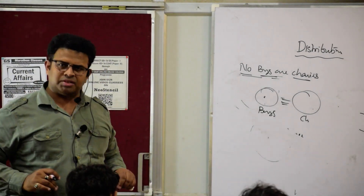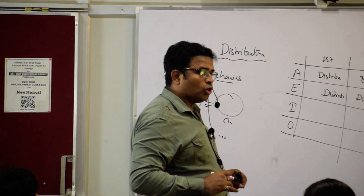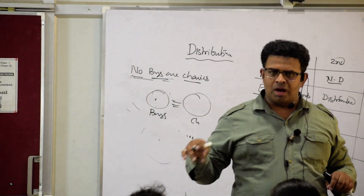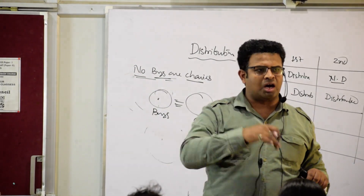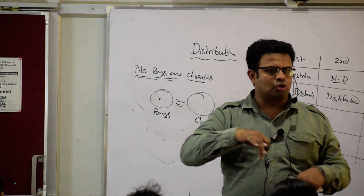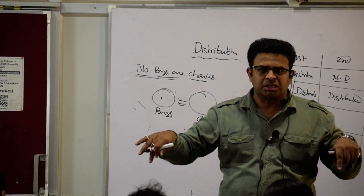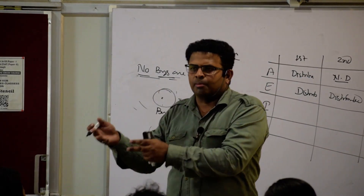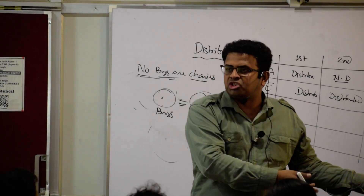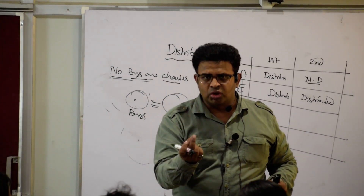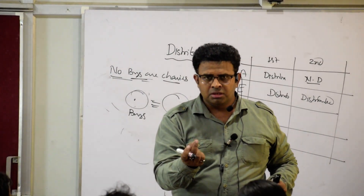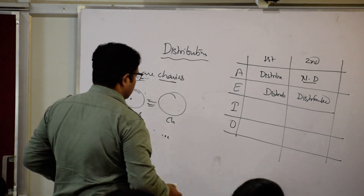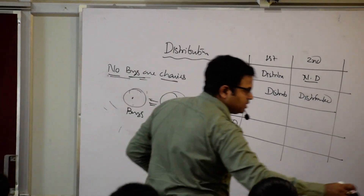In case of E — no boys are chairs — means both are completely zero distributed in each other. A chair is distributed among boys, and boys are also distributed among chairs. It is zero distribution, meaning both are distributed.